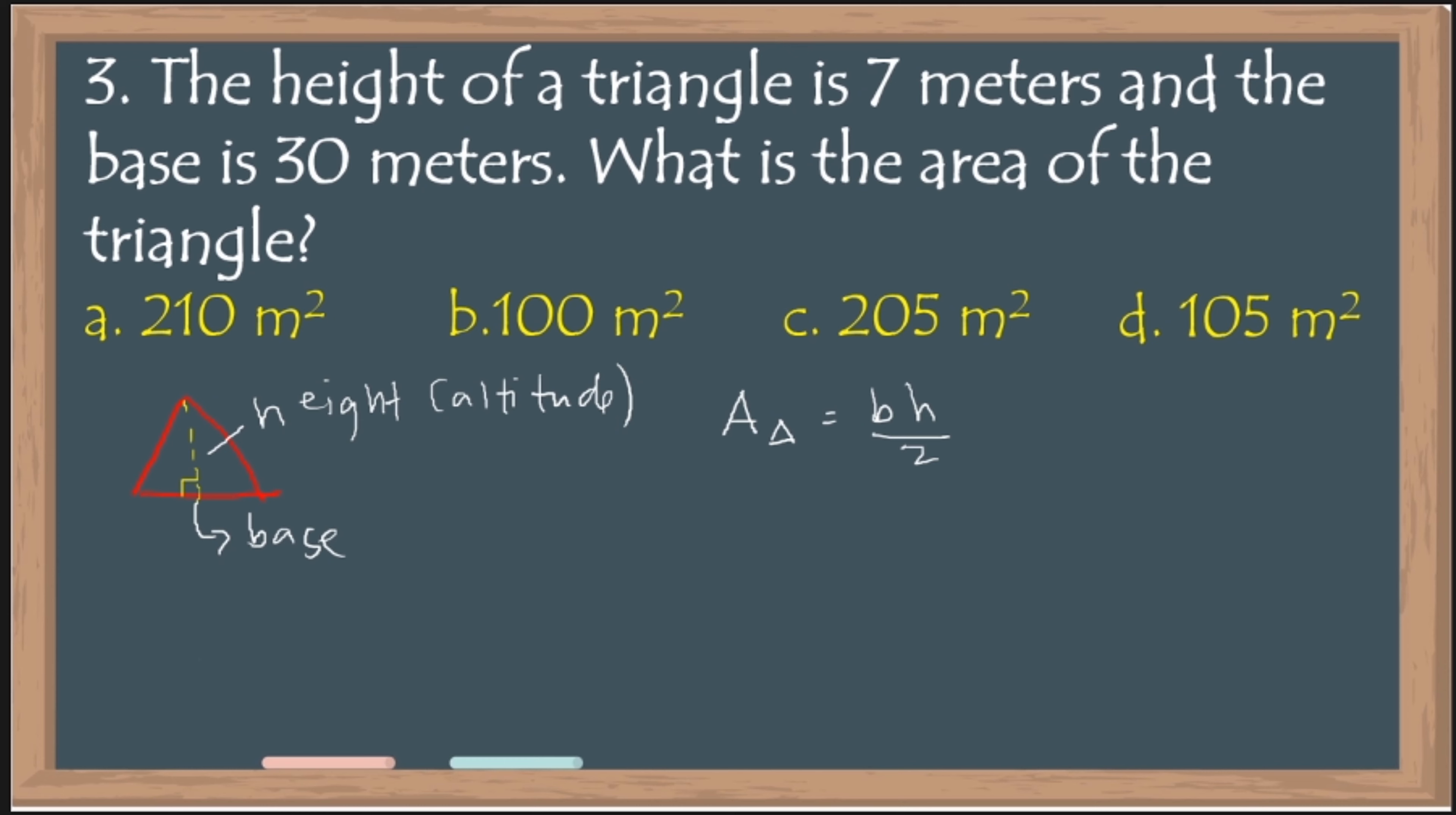Remember, that the area of a triangle is equal to base times height divided by 2. Para madali mong matandaan, kapag ka meron kang rectangle, ang area nya is base times height. Bakit ang area ng triangle ay may divide 2? Kasi ang rectangle ay binubuo ng dalawang triangles. One triangle, then we have another triangle. Kaya, divide 2.